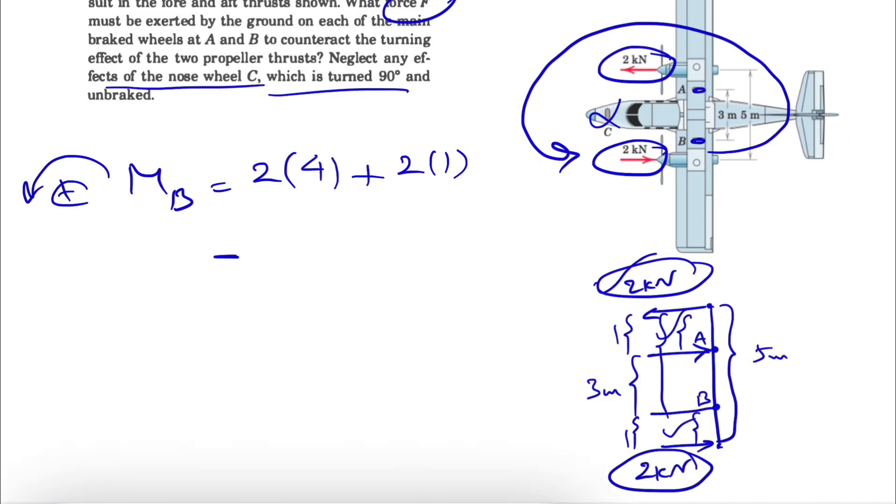So if that's the case, we have the force F, which we have to figure out the magnitude, and the distance is the distance that we have from A to B, which is 3, equal to zero. Our F will be 10 divided by 3, or 3.33 kilonewtons, and that's the force that we are looking for in this question.